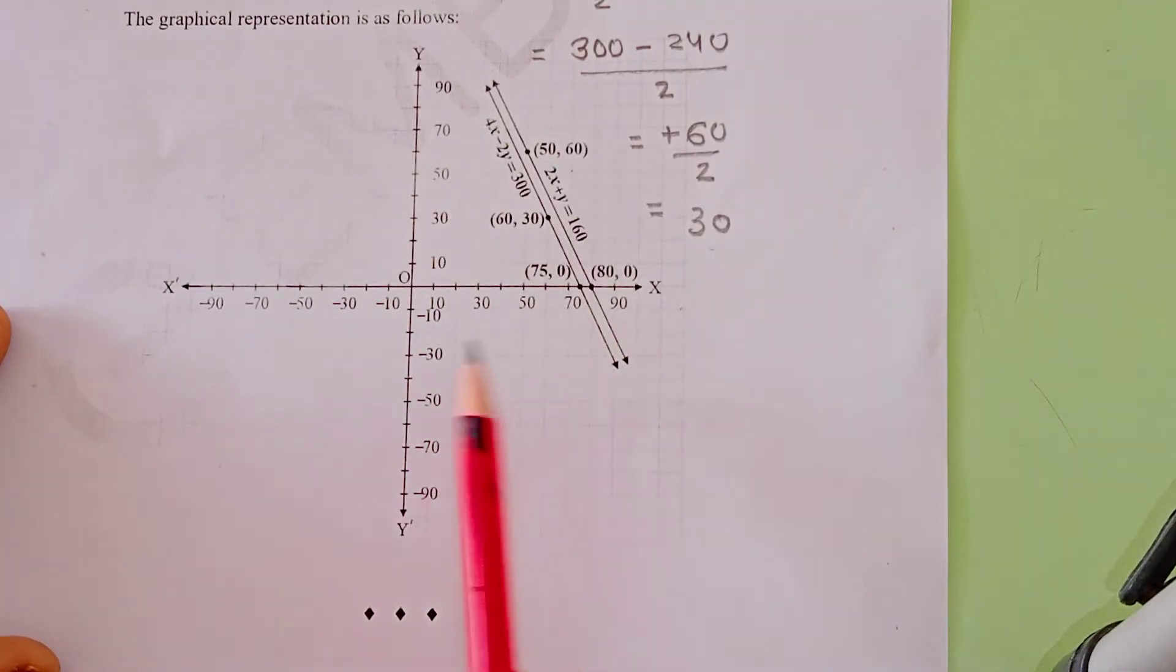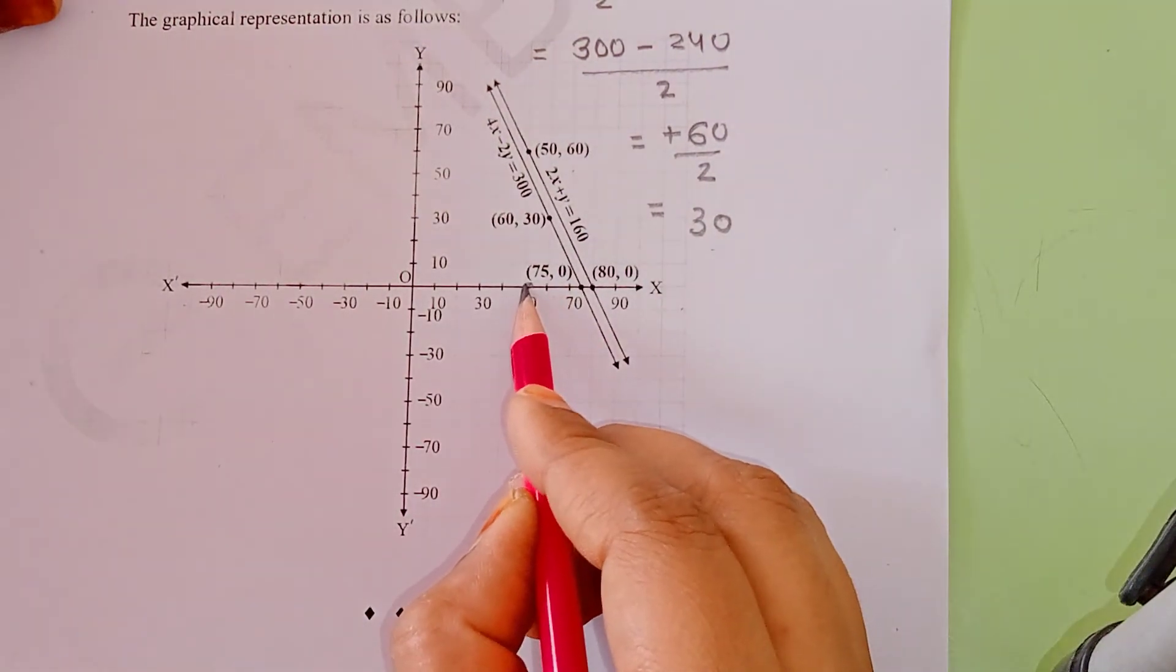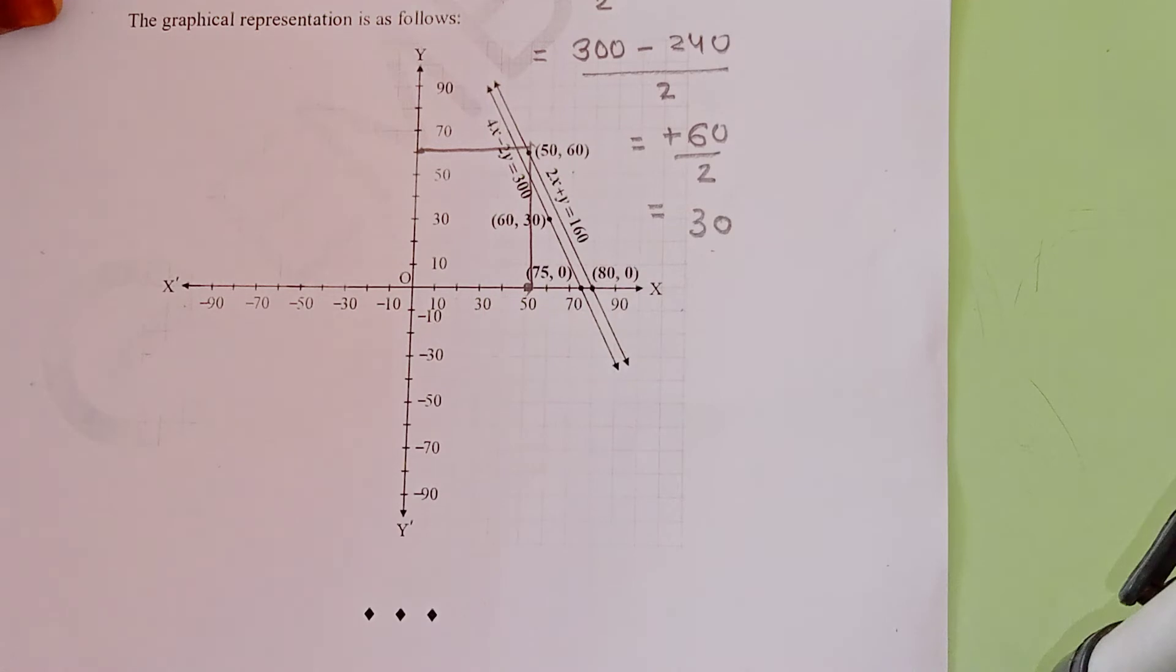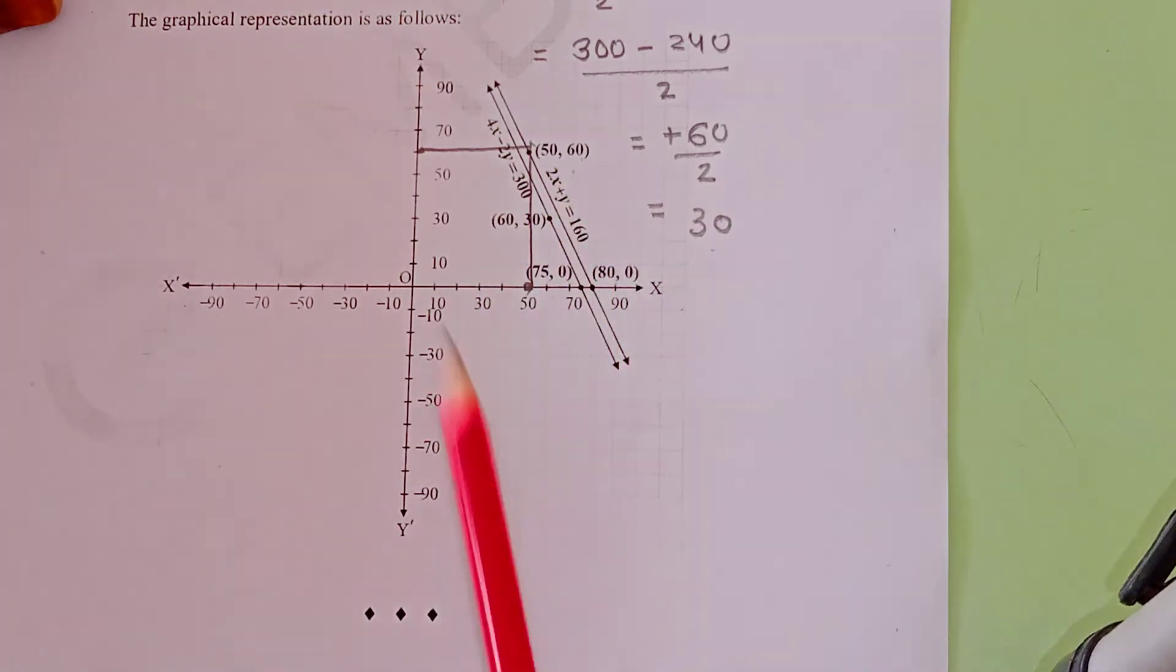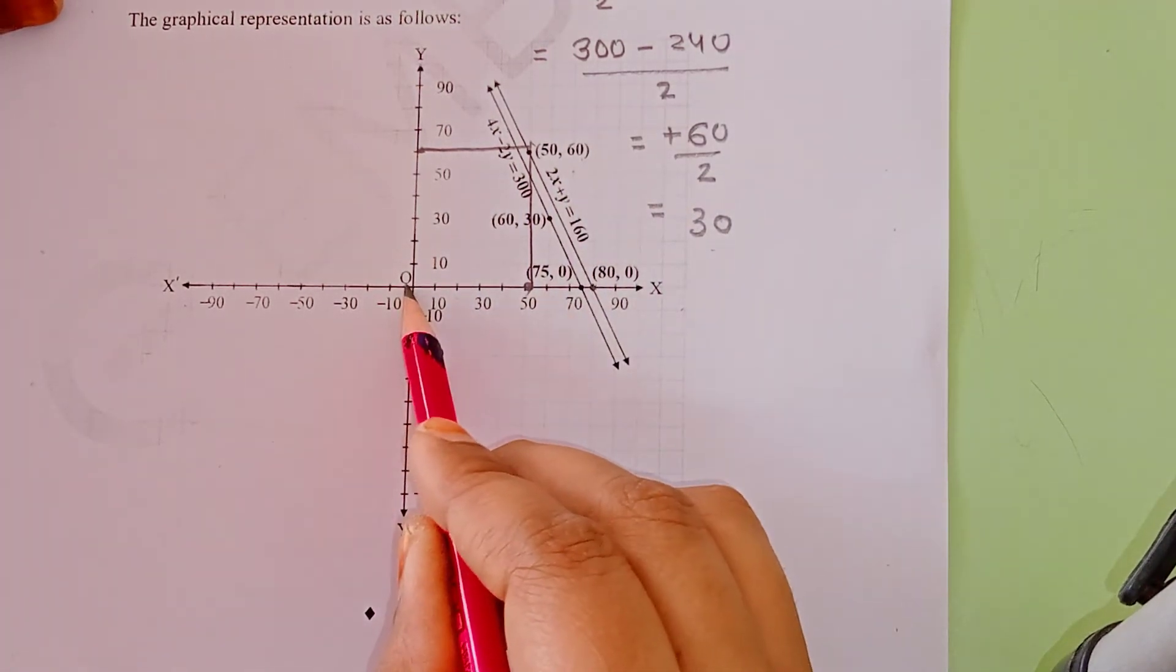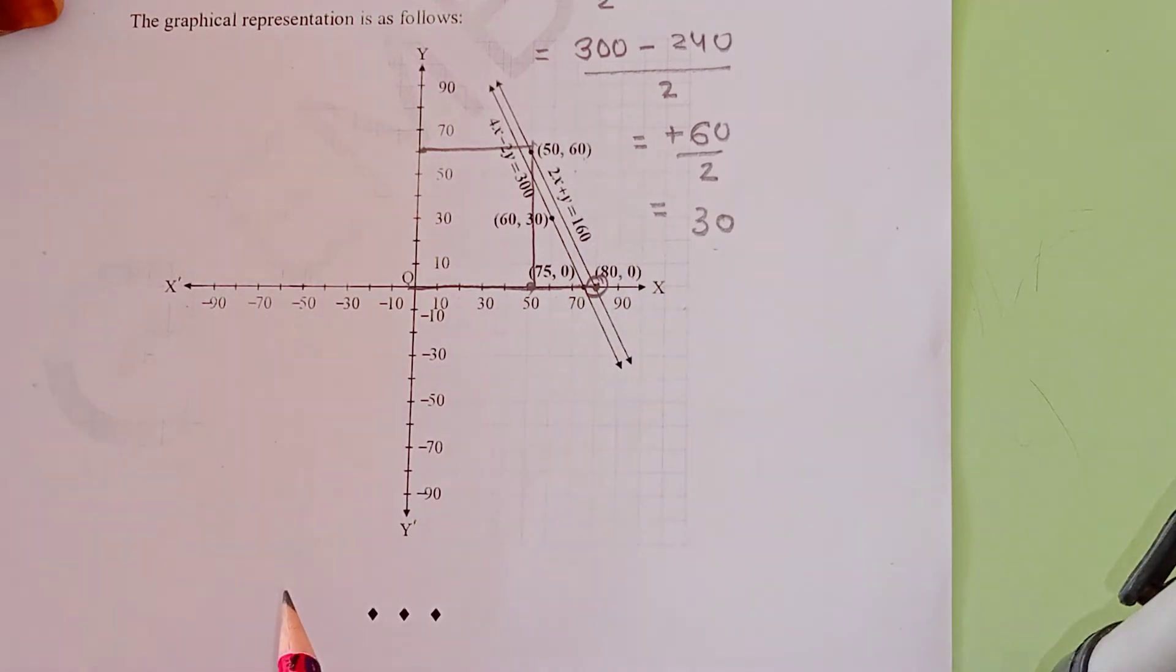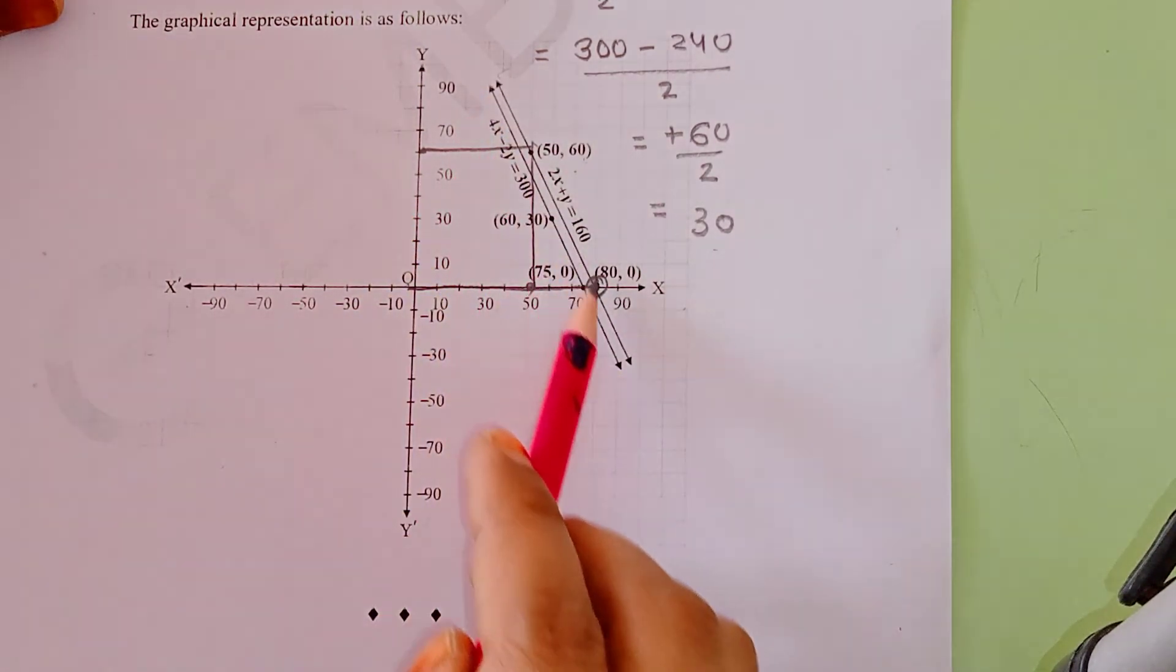Now we plot on the graph. On the x-axis and y-axis, we mark 10, 20, 30, 40, 50, 60, 70, 80, 90, and also negative sides. For the first graph, the first value is (50, 60) - on the x line at 50 and y line at plus 60. The second point is (80, 0). We join these two points to make our first graph, which is the graphical representation of equation 1.